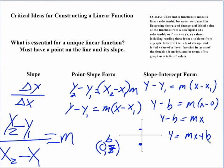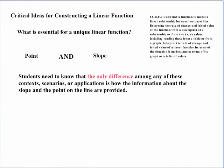And voila, we have our slope-intercept formula equation. So notice starting with slope and working our way over to point-slope form and the slope-intercept form, that really it's all connected and it's important that students see those connections. Now what students need to realize is that the only difference among any of these context scenarios or applications is how the information about the slope and the point on the line are provided. And they also need to realize that really the main difference with the information is whether it's provided directly or indirectly.